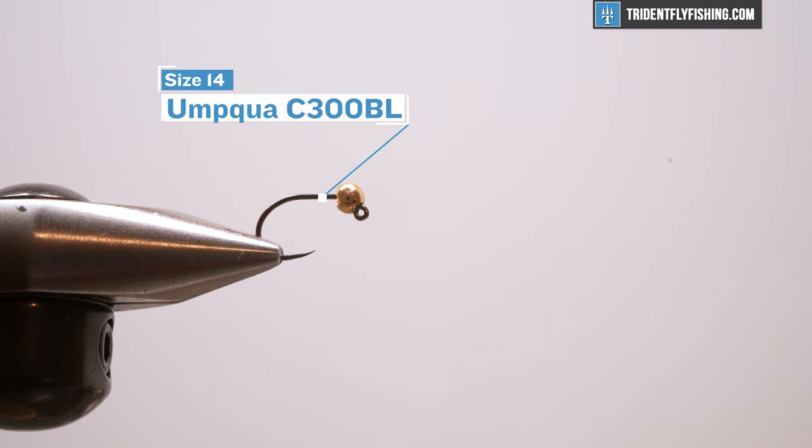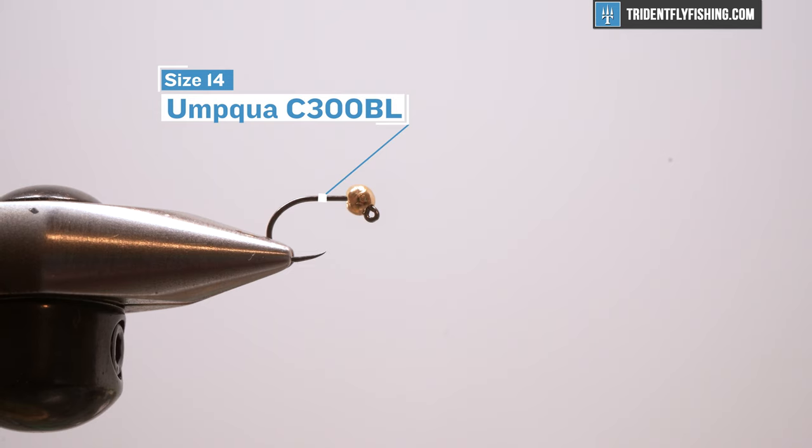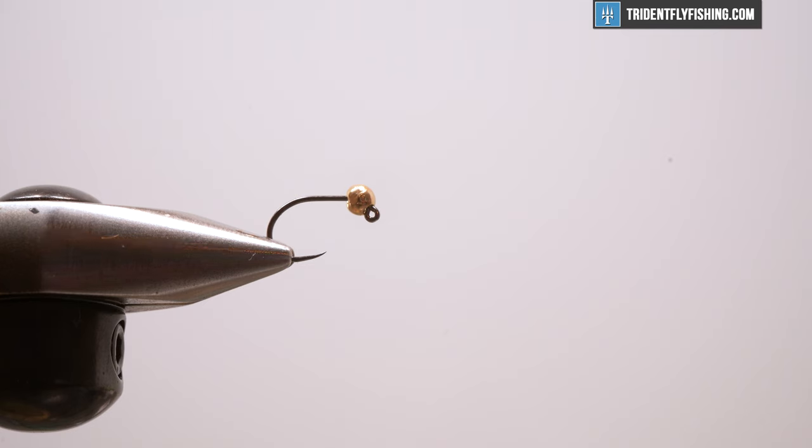In the vise today I have a size 14 barbless jig hook, an Umpqua C300BL, so a barbless jig hook and a gold tungsten bead to match. Of course, it's a slotted bead because we're using a jig hook today.